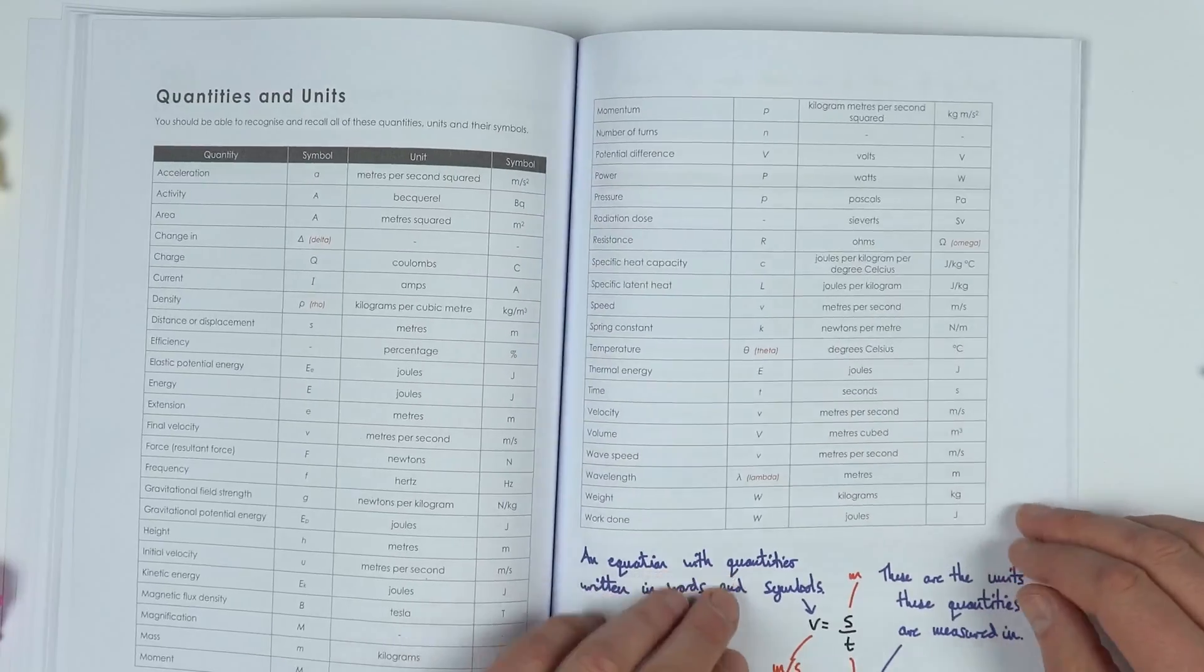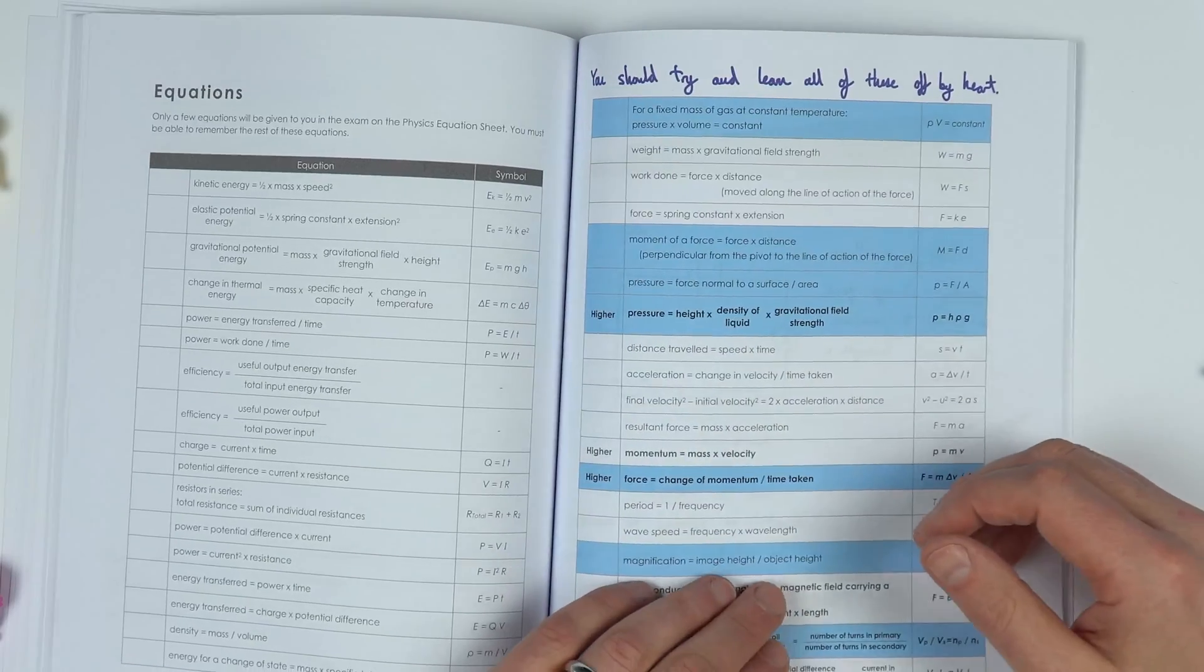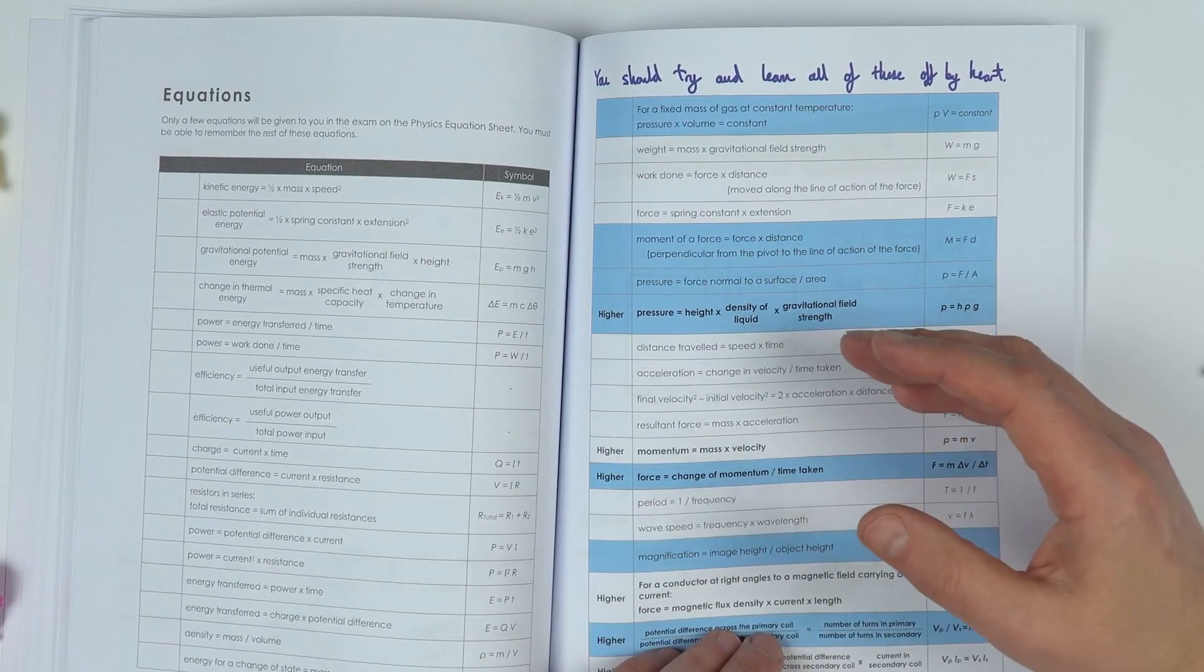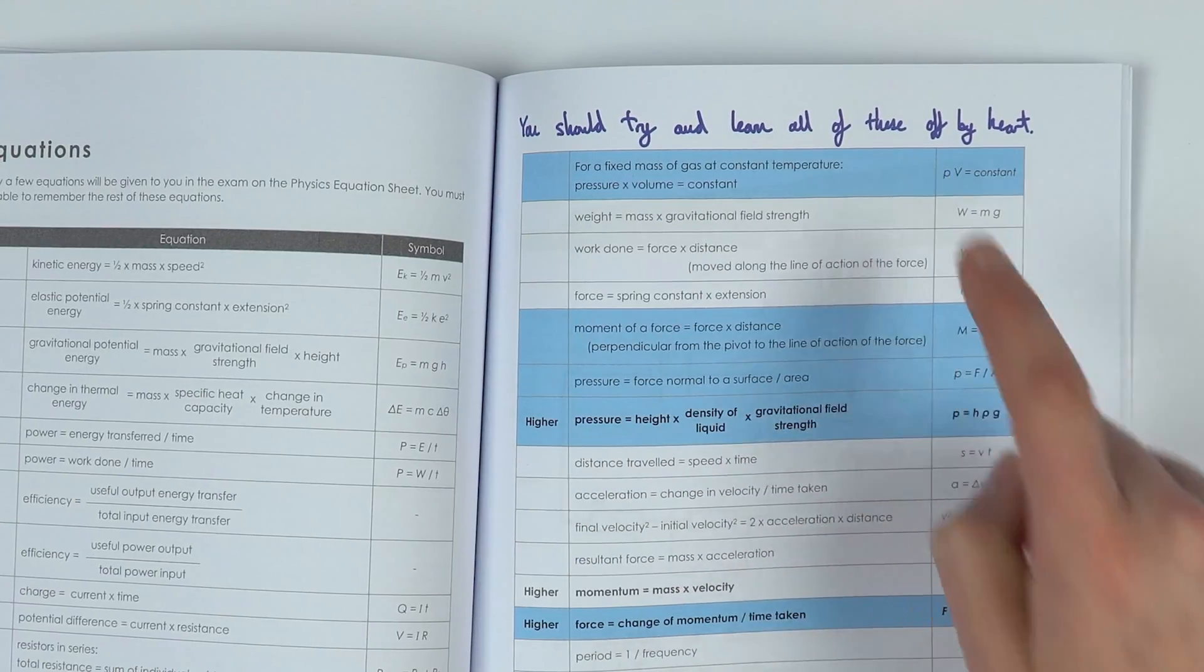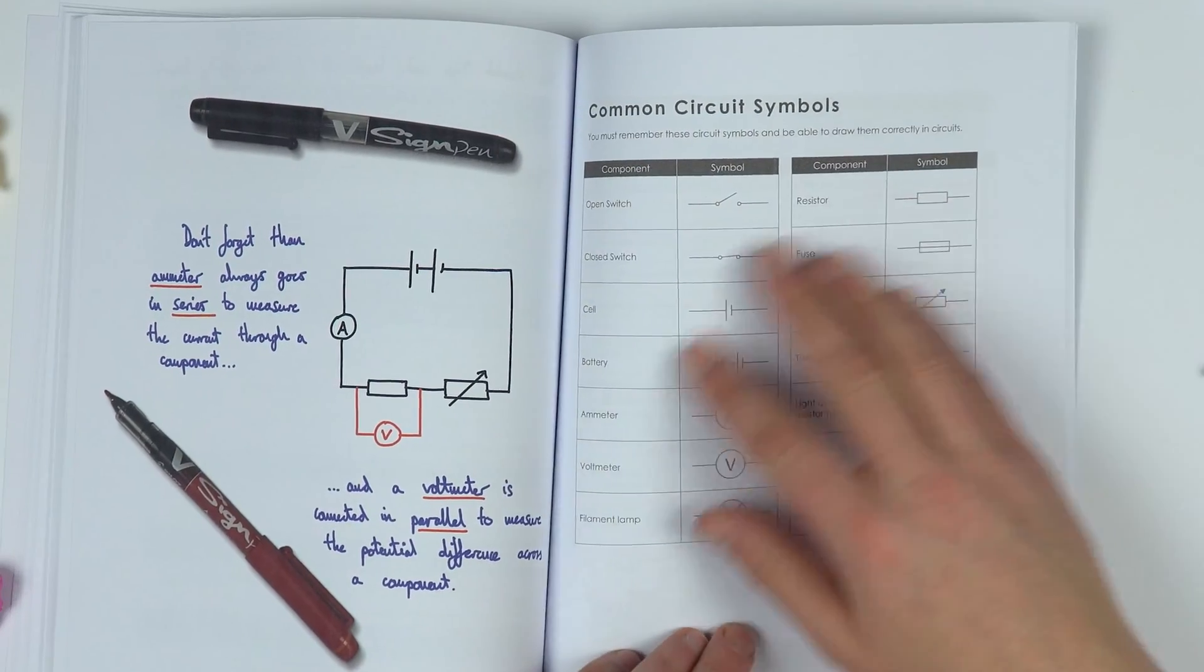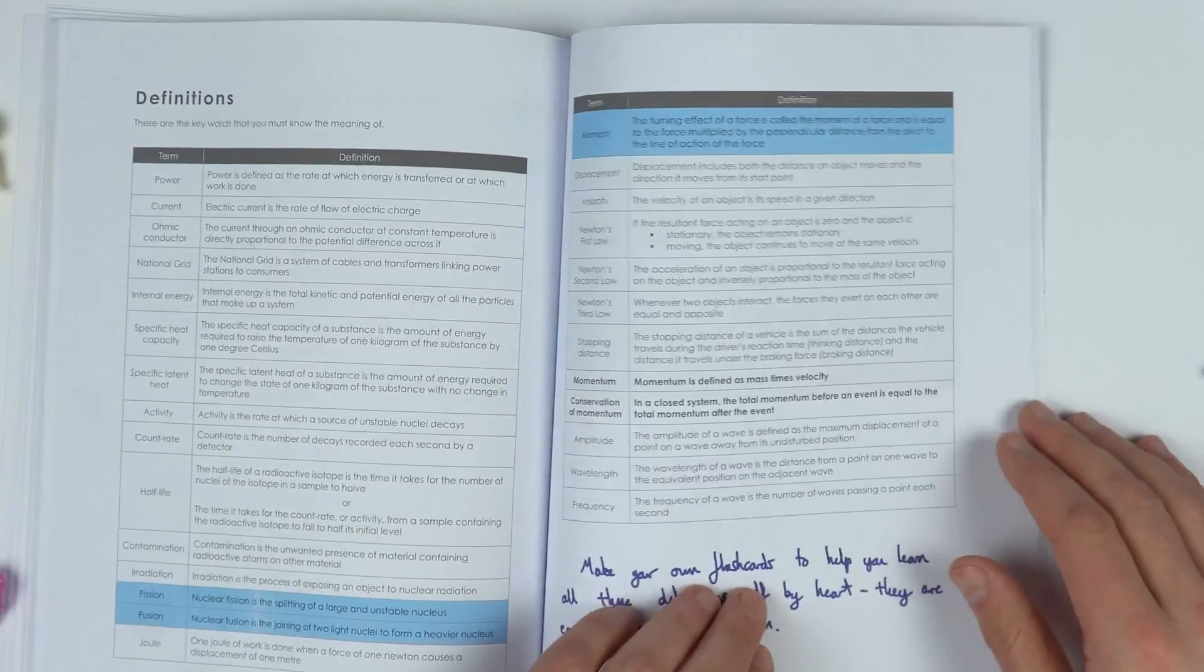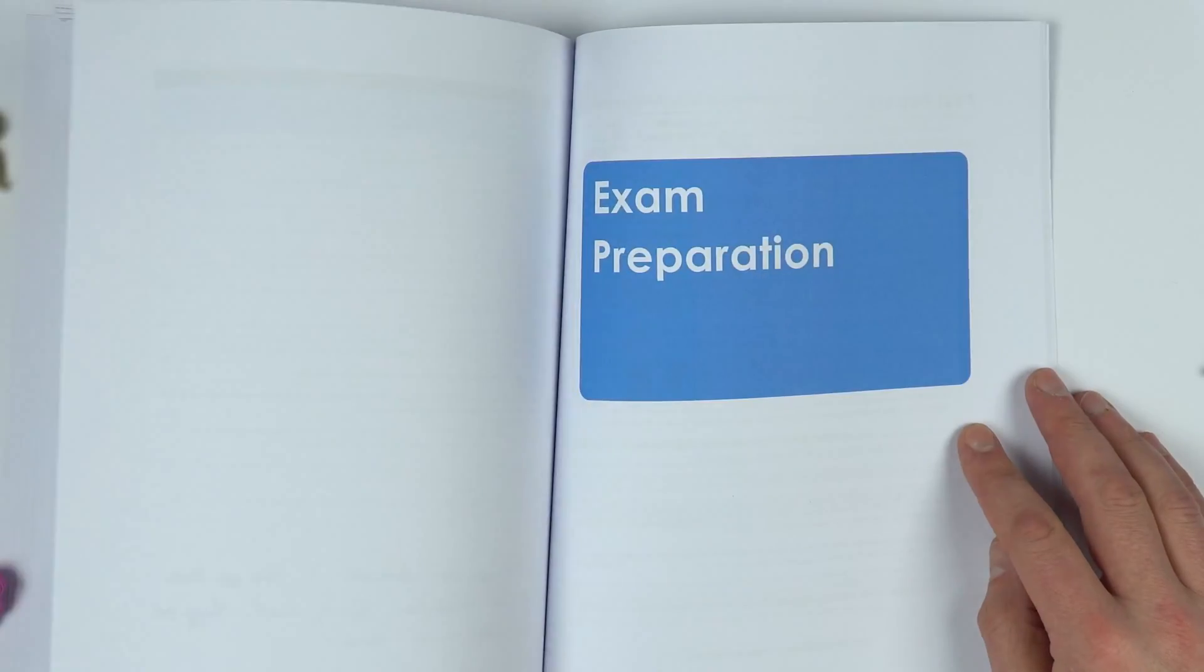A little bit about the calculator. Quantities and units are just simple things you need to know, and also the equations. Although you'll be given many of these in the exam, you should try and learn all of these off by heart as you're preparing. Common circuit symbols, ammeters in series, voltmeters in parallel. A load of definitions at the end for you to learn.